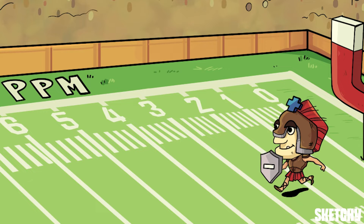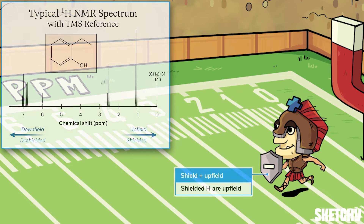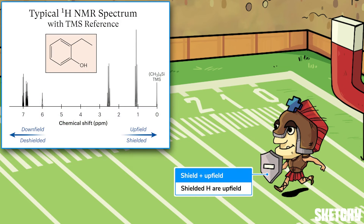We call a proton like this shielded, and its location near zero parts per million in the NMR spectrum is called upfield. That's why the shield-bearing Spartan is upfield by the zero yard line.